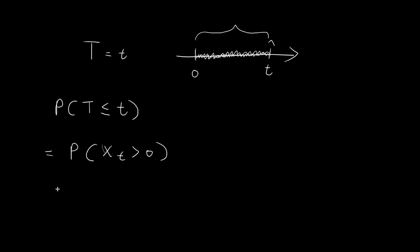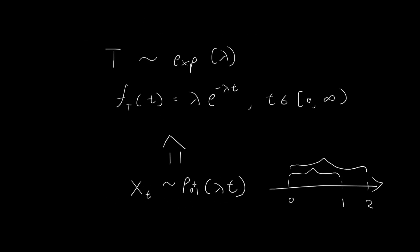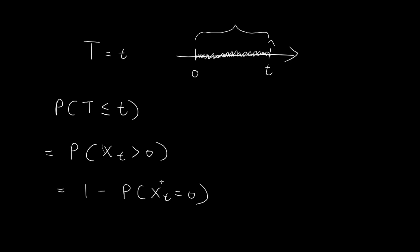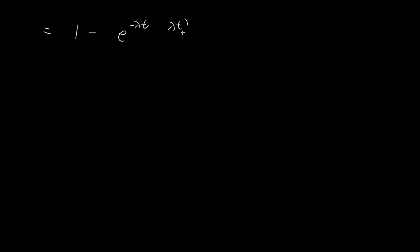To evaluate this expression, we consider the complement: 1 minus the probability that X_t equals 0. The complement of being larger than 0 is just equal to 0. We know the probability mass function of the Poisson process follows the Poisson distribution with parameter λt, so we can rewrite this using that PMF. This gives us 1 minus e to the power of negative λt, times (λt)^0 divided by 0 factorial, which equals 1. So the probability that T is smaller than or equal to small t is 1 minus e^{-λt}.